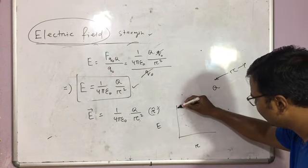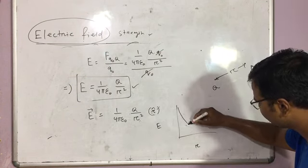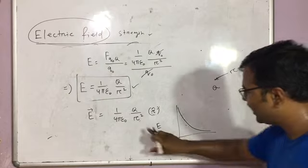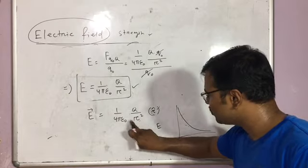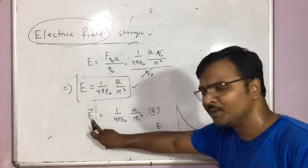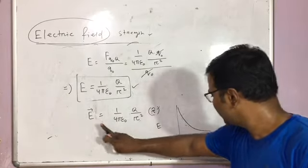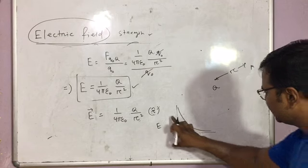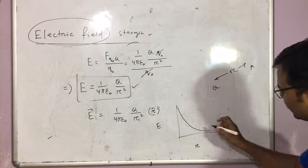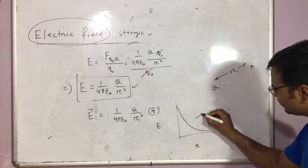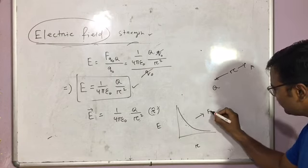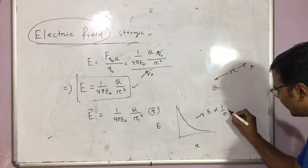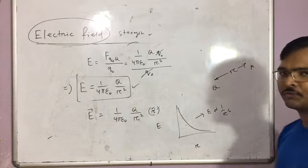The value will be like this: if R tends to 0, E tends to infinity, and if R tends to infinity, E will be 0. So the graph will be like this — E is proportional to 1 by R square.